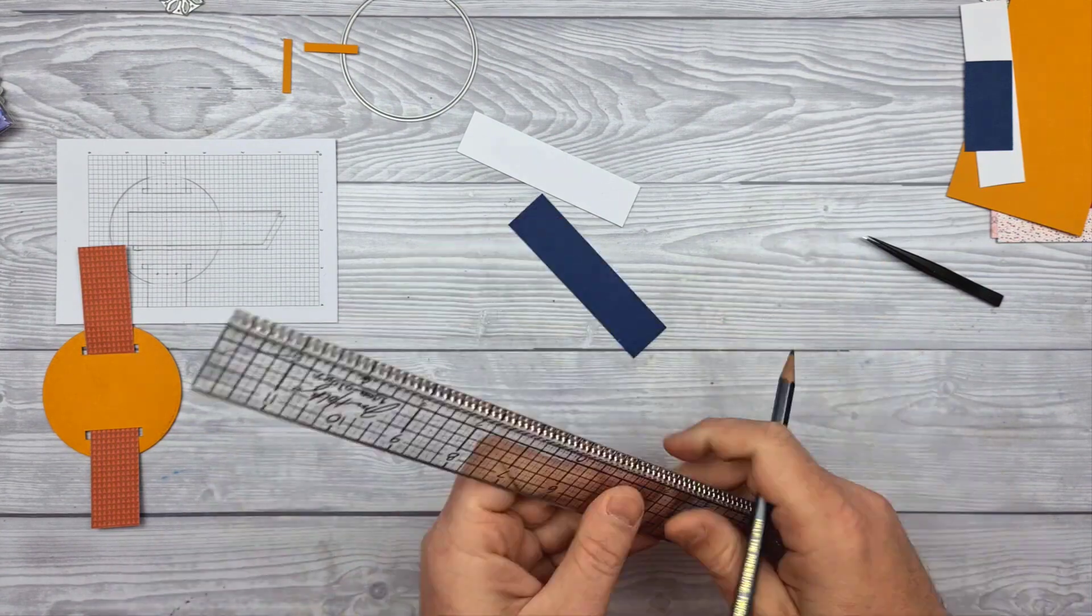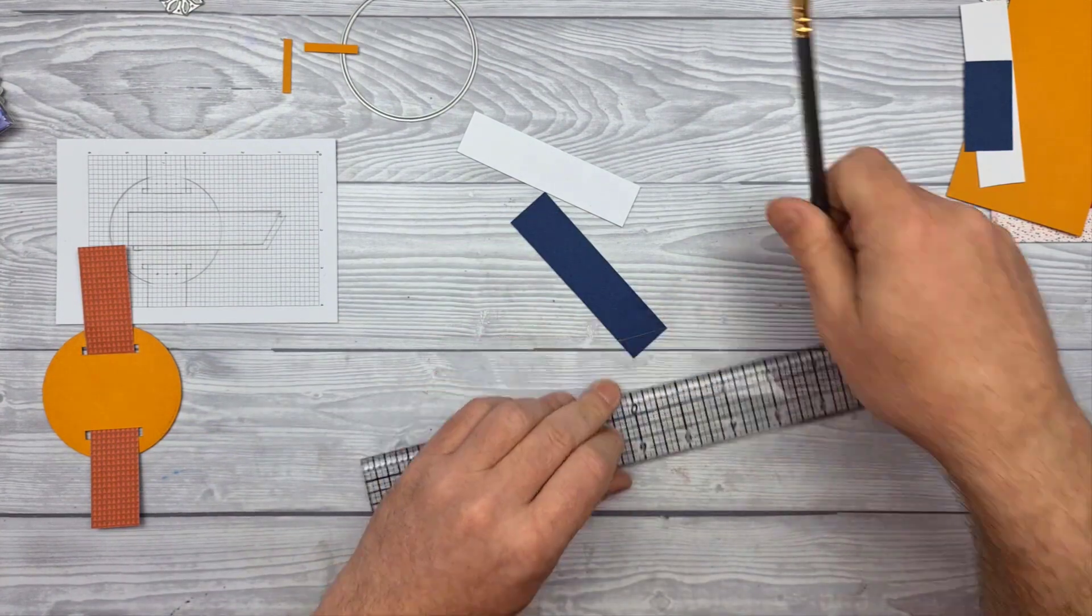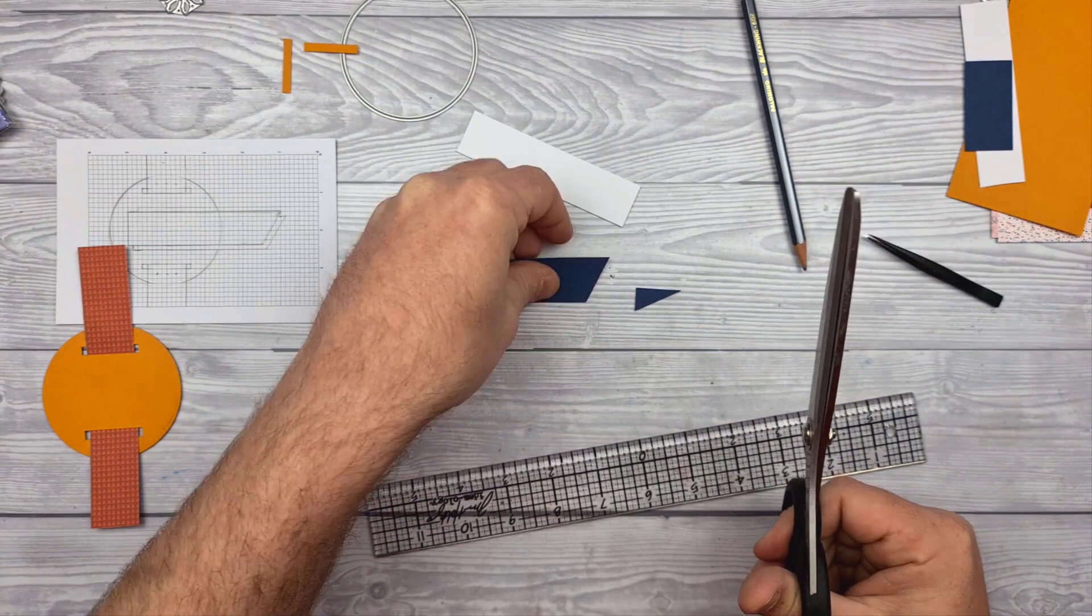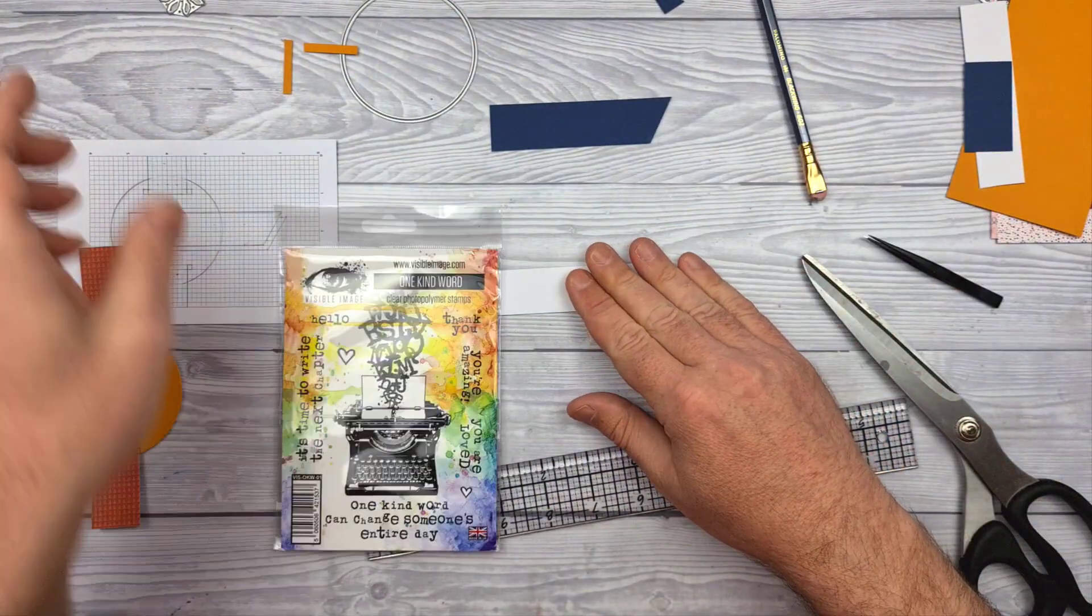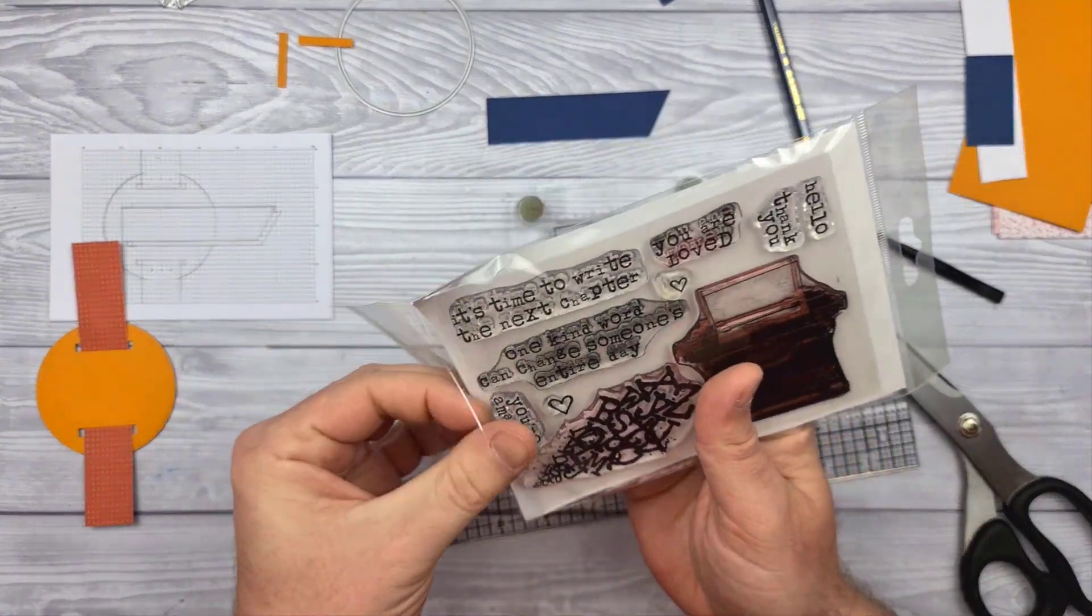For the little strips to get the angle, basically I'm measuring in half an inch from one corner and then connecting it with the opposite corner and trimming across that line.